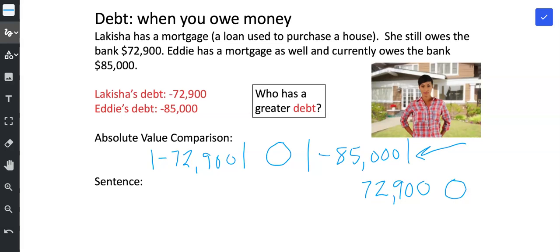So the absolute value of negative $72,900 is $72,900. Remember, absolute value is just distance from zero. And then the absolute value of negative $85,000 is $85,000. And so Lakeisha's debt, $72,900, is less than Eddie's debt, which is $85,000.